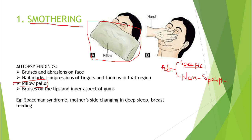There will also be bruises on the lips and the inner aspect of the gums. As seen in this picture, the hand of the assailant applies pressure to the mouth and nose of the victim, so the lips get compressed against the gums and teeth. This causes bruising or injury to the lips and gums, which will also be visible at autopsy.